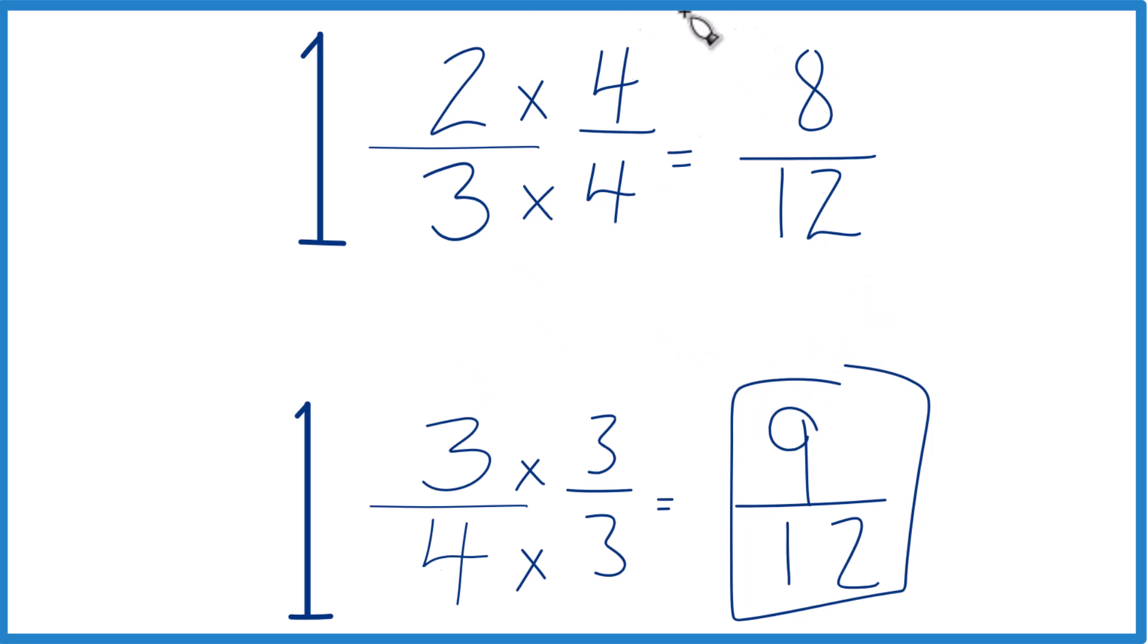And since these are equivalent and these are equivalent, 1 and 3 fourths, that's going to be greater than 1 and 2 thirds. That's how you do it. This is Dr. B. Thanks for watching.